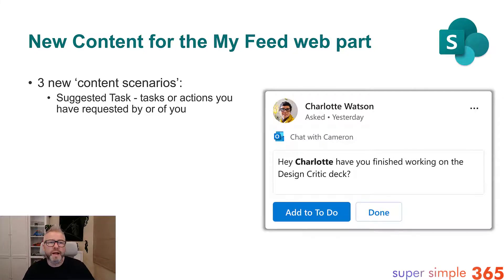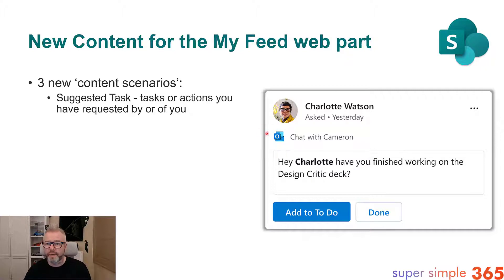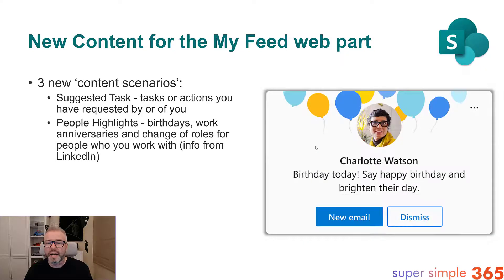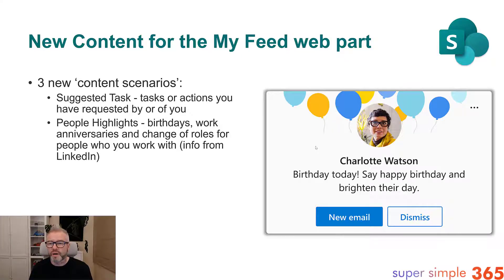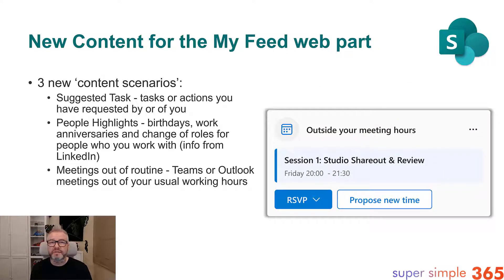Getting over to SharePoint — new content for the My Feed web part. You have the option to add your feed in SharePoint, and you're going to get three new types of content. First is suggested tasks — things you have to do, have requested, or someone has requested of you, including tasks identified from emails. Second is people highlights — birthdays, work anniversaries, the people side of your relationships — though they have to have allowed updates coming from LinkedIn for you to see this. It helps you keep the relationship side ticking over as you see less of people while working from home.